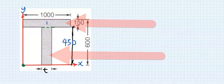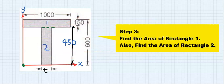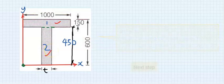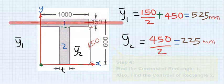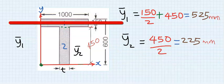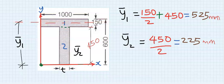This is rectangle one and this is the second rectangle. Step number three: find the area of each of the rectangles, then find the centroid of each rectangle. We are going to split this rectangle into two parts and measure the distance from that centroid to the origin — that is the centroid of the first rectangle.